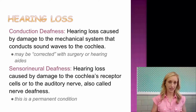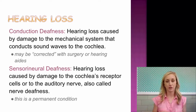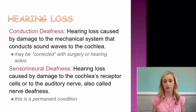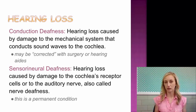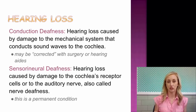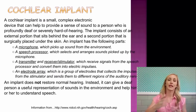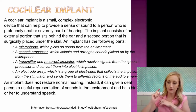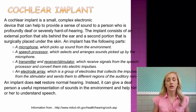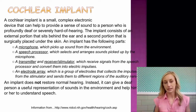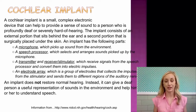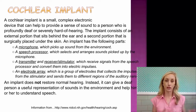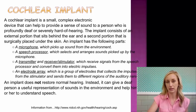Sensorineural deafness — also called nerve deafness — is hearing loss caused by damage to the cochlea's receptor cells or to the auditory nerve. This is a permanent condition; there is no correcting it with a hearing aid the way you can correct conduction deafness. You can, however, receive a cochlear implant — an implant on the cochlea in your ear. The implant does not restore normal hearing; instead, it can give someone who is deaf a useful representation of sounds in the environment and help them understand speech, but it does not correct the underlying problem.